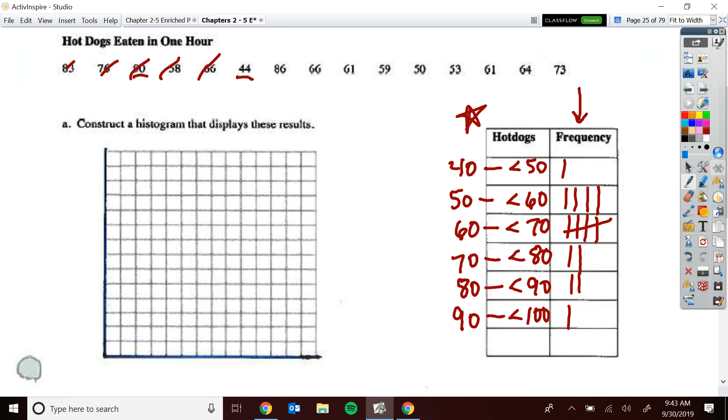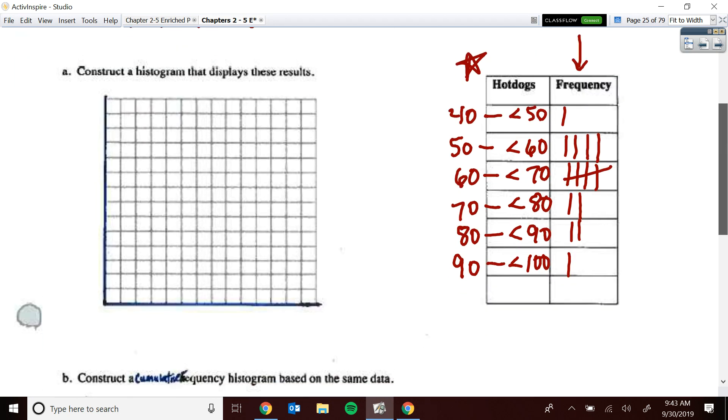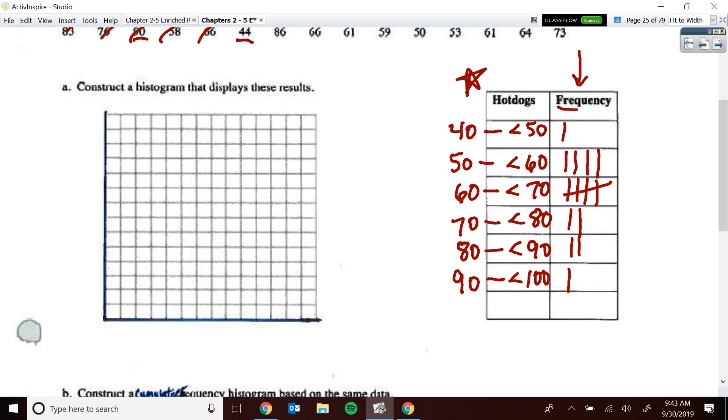So now we're going to go ahead and graph those. If this asks just for a frequency chart, then I'm just going to graph these numbers. You know, 1, 2, 3, 4, 5, 6, based on how many we have in the frequency. But FYI, sometimes, and you have to watch for this, sometimes you are asked for relative frequency.